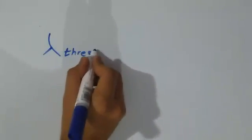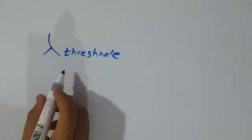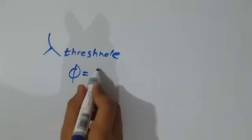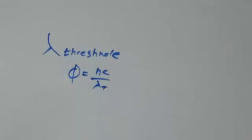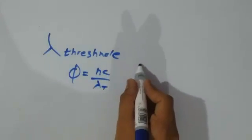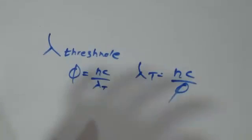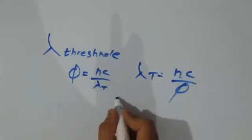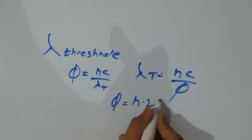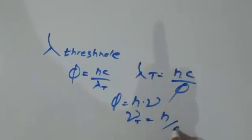Depending on that, we have so many threshold formulas. Like we have the threshold wavelength where φ = hc/λ, so λ_threshold = hc/φ. Similarly with frequency, φ = h × ν where ν is the frequency, so frequency threshold = φ/h.